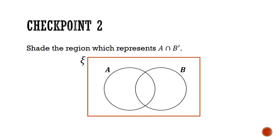Why don't you have a go? Try this shading. How would you shade the region which is represented by A intersect B'? Let me give you a hint. What does A have in common with the region not in B? Pause the video here and give this question a good try.